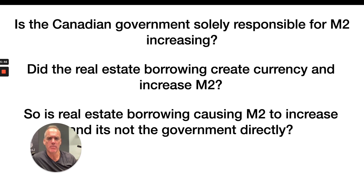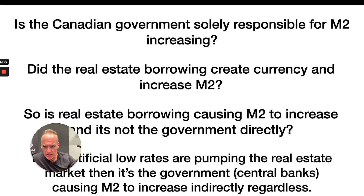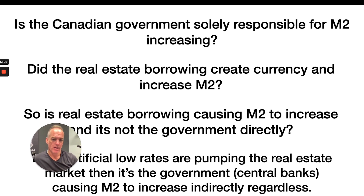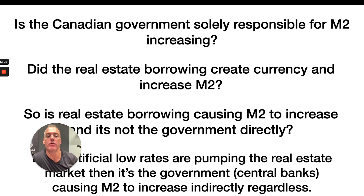It's kind of a chicken-and-egg thing to me. Is the borrowing in the real estate market causing M2 to increase — not the government directly — or is it people borrowing money? But then, artificial low rates are pumping the real estate market, so it is the government and central banks causing M2 to increase indirectly. No one would be going aggressively into the real estate market if interest rates were not artificially low. Right now in Canada you can get a five-year fixed rate under two percent, or variable rates around 1.25 percent. The central banks have kept rates low by creating new currency and buying bonds.